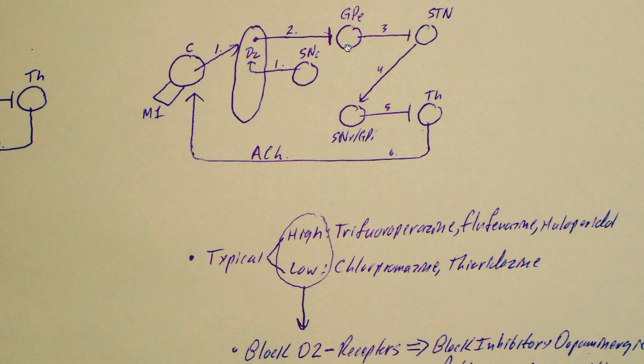If the globus pallidus externa is disinhibited, process number three can occur now. So we're going to inhibit the subthalamic nucleus. If the subthalamic nucleus is inhibited, it will no longer carry out process number four. It will no longer stimulate this SNR GPI.